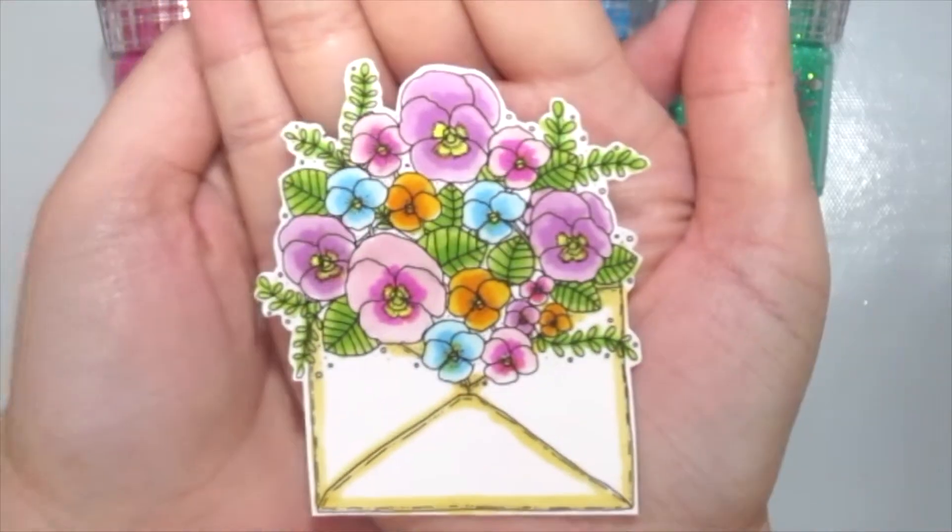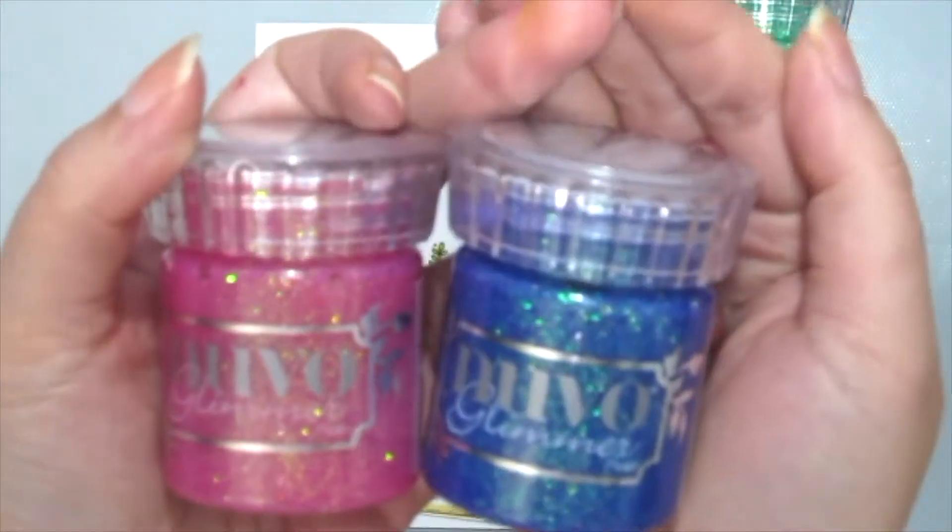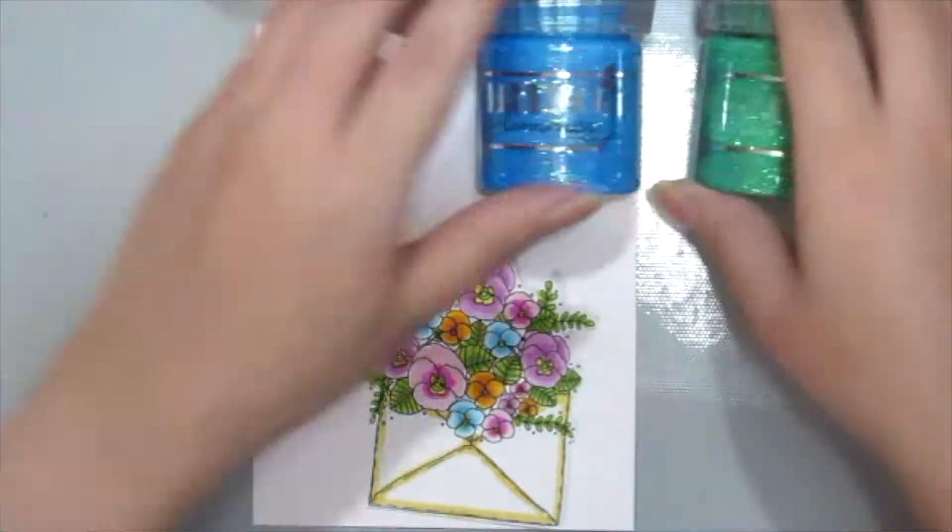So I've already stamped and colored this beautiful flower envelope stamp and I'm using some Nouveau Glimmer Paste here to create my background.